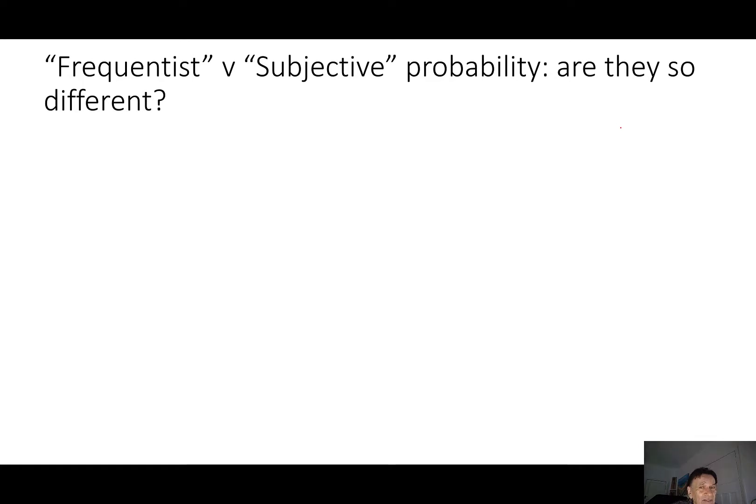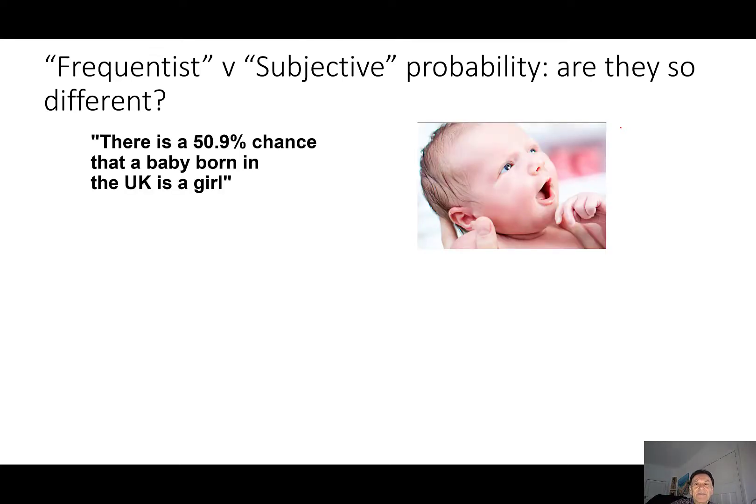The question is, are these actually that different? You know, it turns out actually when you get into the details of things, these things kind of like converge. So a classic frequentist probability would be the probability of a baby born in the UK as a girl. So I believe at the moment that's based on masses of recent birth data. There's a slightly less than 51% chance that a baby born in the UK as a girl. But actually this changes over time. At the beginning of the 20th century, there was a greater chance of a baby born in the UK being a boy. So again, there's no definite answer here. It depends on what data you're using over which period.